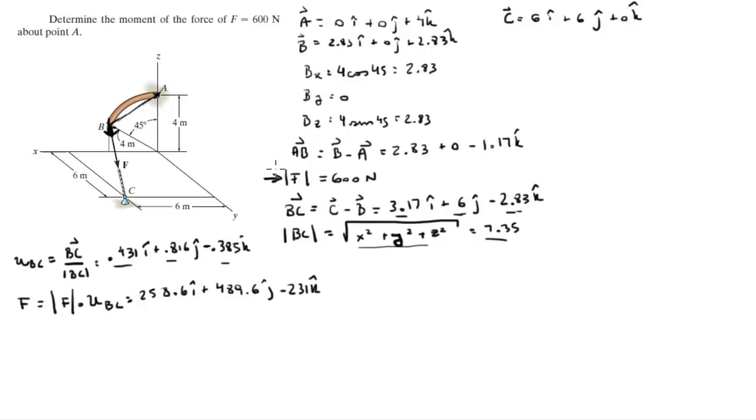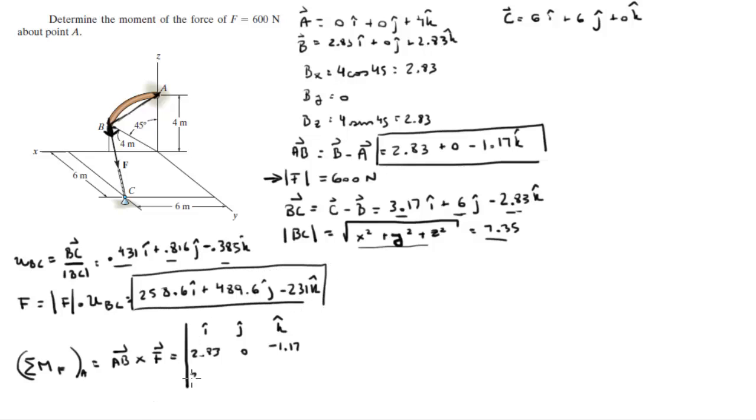Now that we have the vectors that we need, we know that the moment that F creates about A is given by the vector that goes from A to B cross the Cartesian vector form of F. So you draw your matrix, I, J, K. Vector AB we found right here, and it's 2.83, 0, negative 1.17. And the force F we found right here, Cartesian vector form of F, and it's 258.6, 489.6 and negative 231.